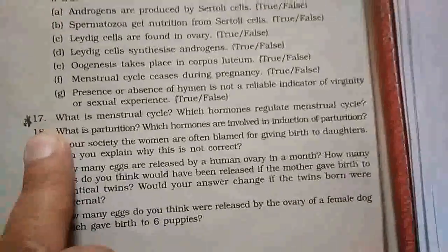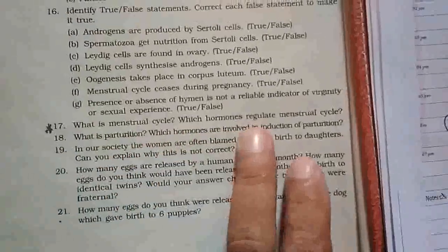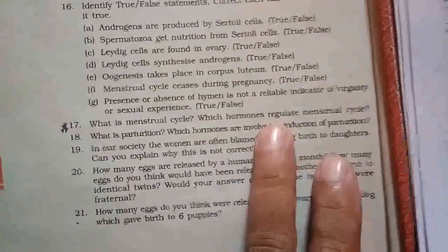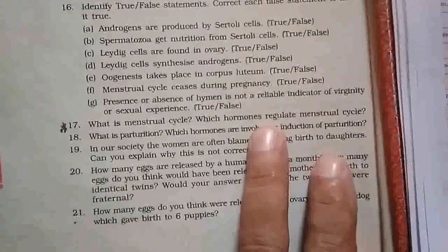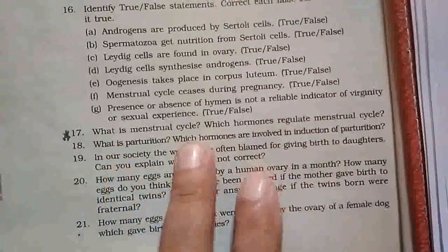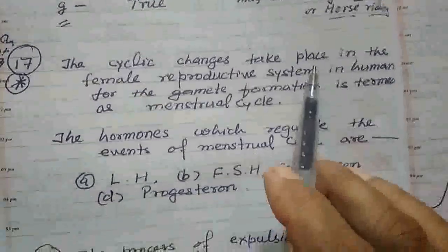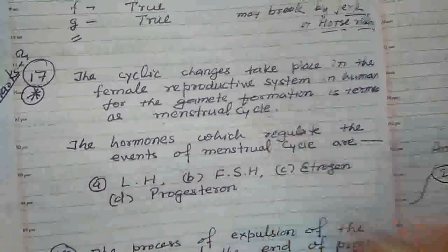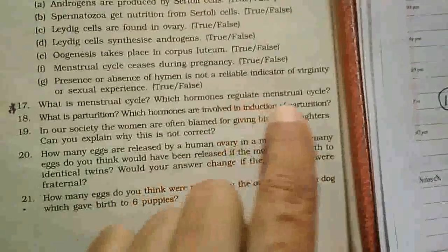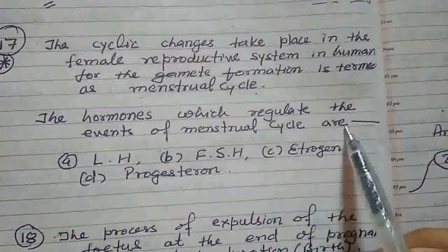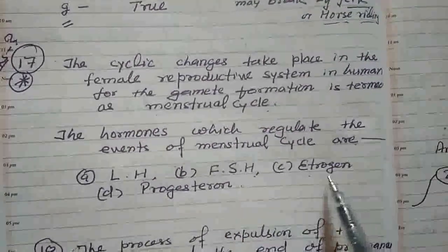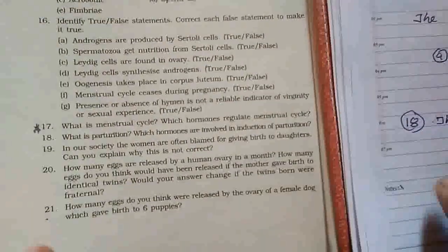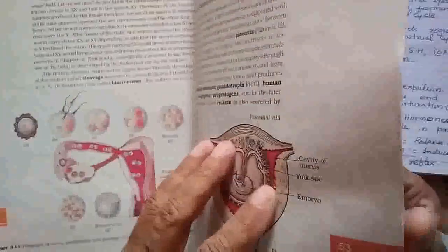Question 17: The answer depends on the marks allotted. If it carries 2 or 3 marks, write only the definition: the cyclic changes taking place in the female reproductive system for gamete formation is termed the menstrual cycle. The hormones that regulate the menstrual cycle are luteinizing hormone (LH), follicle stimulating hormone (FSH), estrogen, and progesterone. If it is a long answer type, explain the menstrual cycle in detail.